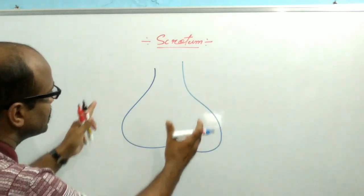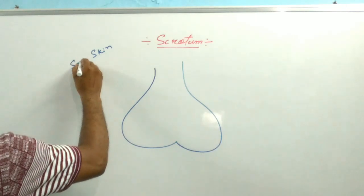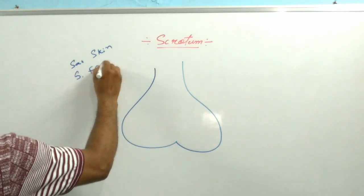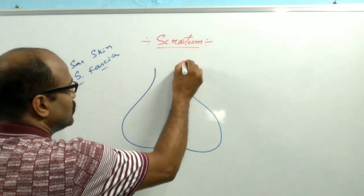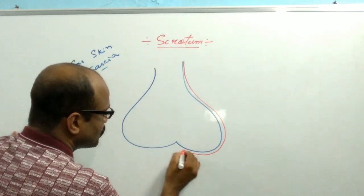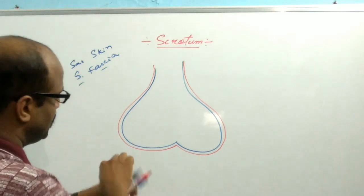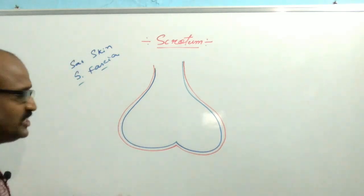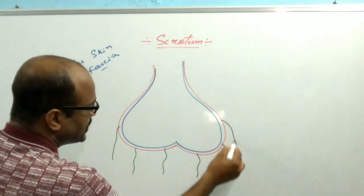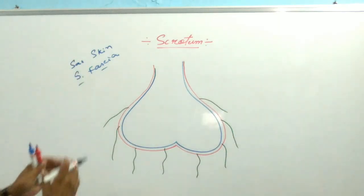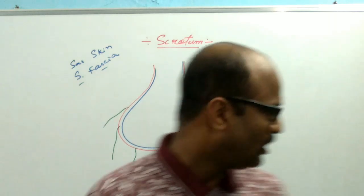The scrotum is a sac of skin, or this is the superficial fascia of skin. Suppose that this is the scrotum and this is the superficial layer of skin. The outer surface of the scrotum is provided with thin hair at or after puberty. These thin hairs are present on the surface of the scrotum and develop at or after puberty.